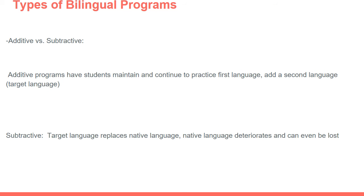Let's describe the different types of bilingual programs. An additive program is where students maintain and continue to practice their first language, then add a second language — maintaining both. A subtractive bilingual program unfortunately emphasizes the second language so much and lacks practice in the native language that the target language, English, ends up replacing the native language — abilities in Spanish, Vietnamese, Arabic, or Mandarin can deteriorate so much they could even be lost.